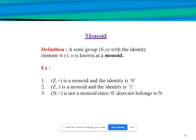Next we will explain monoid. The definition of monoid: a semi group (S, ∘) with an identity element with respect to ∘ is known as a monoid. For example, (Z, +) is a monoid, where Z represents the set of integers and the identity element is zero. (Z, ·) is a monoid with identity element one. (N, +) is not a monoid since zero does not belong to N.